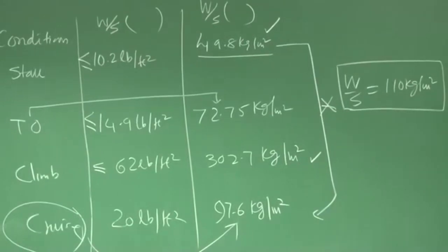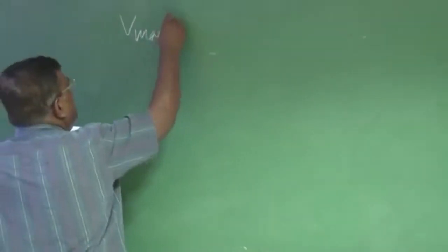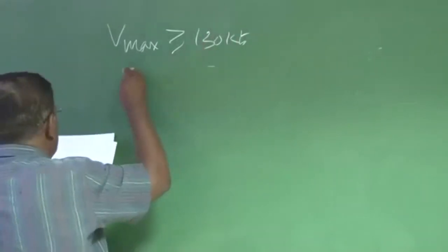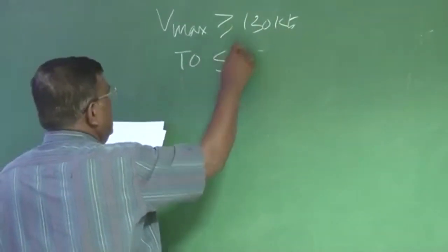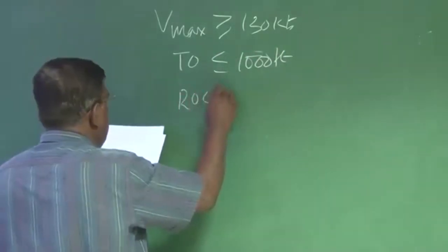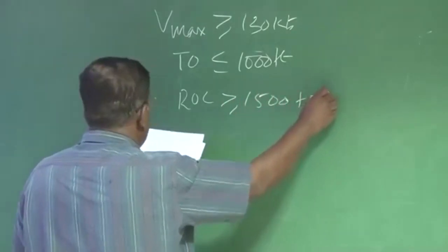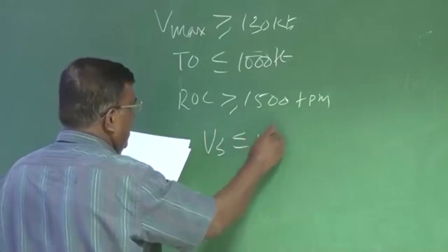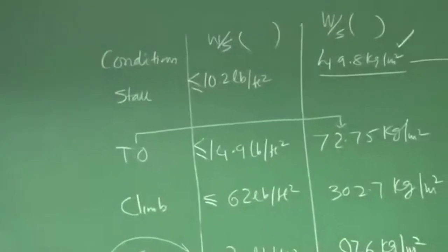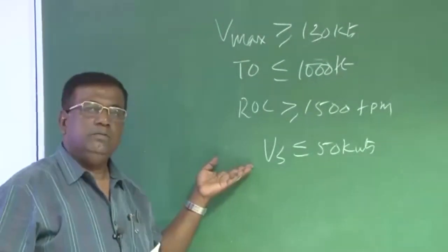We have to again go back to our question. V max 130 knots, then takeoff distance less than 1000 feet, rate of climb greater than 1500 feet per minute and V stall less than 50 knots. So with this new wing loading, we will check whether these mission requirements are meeting or not.